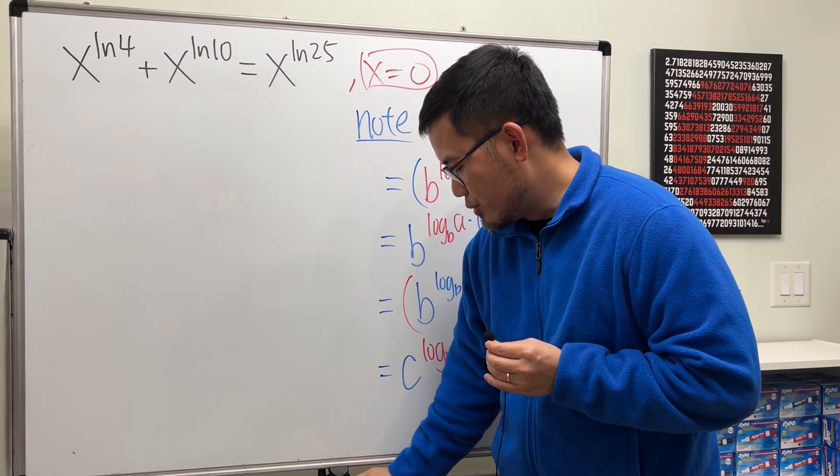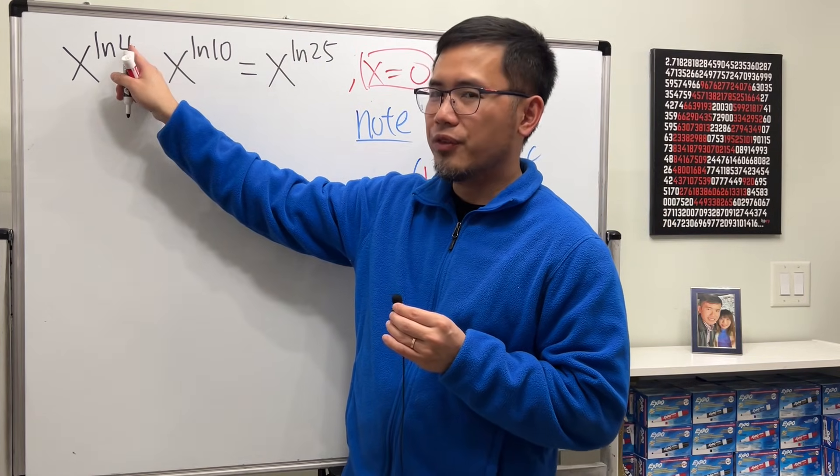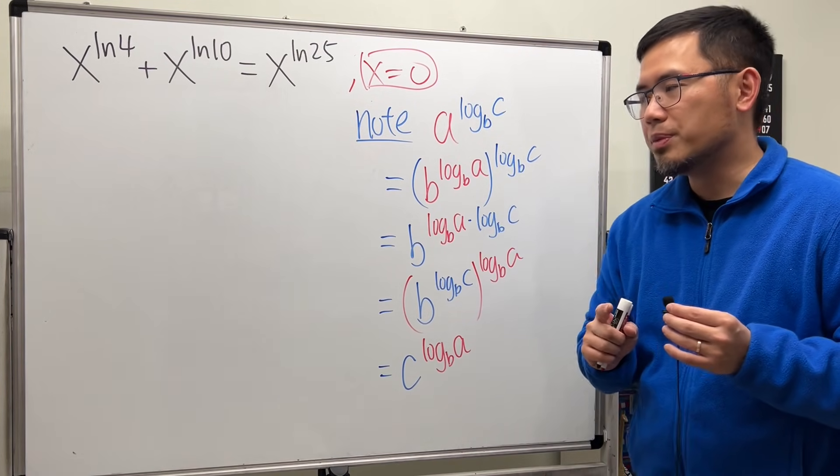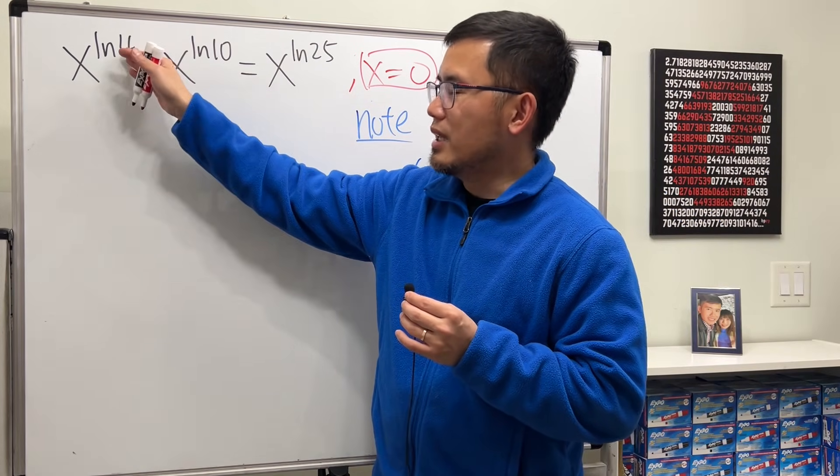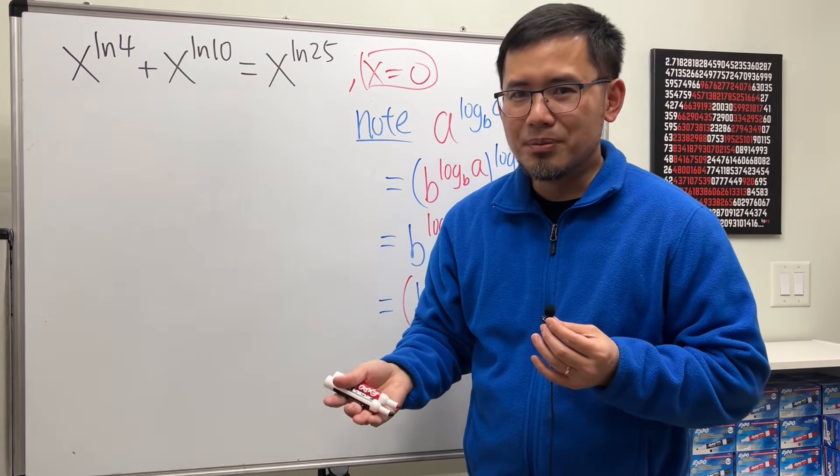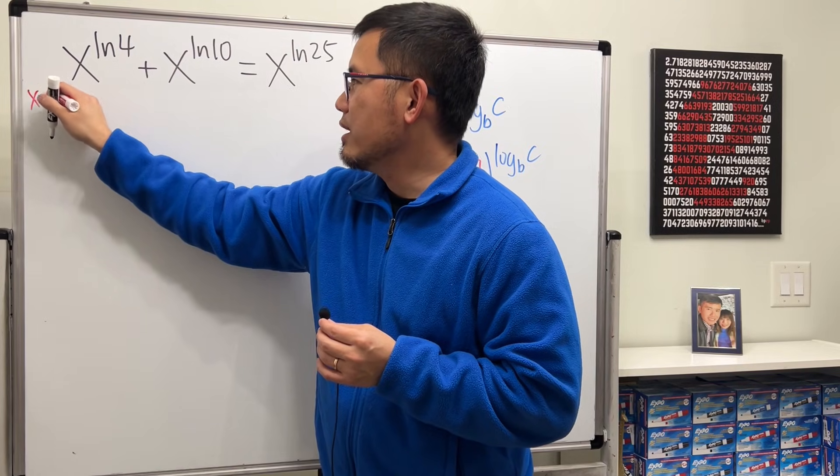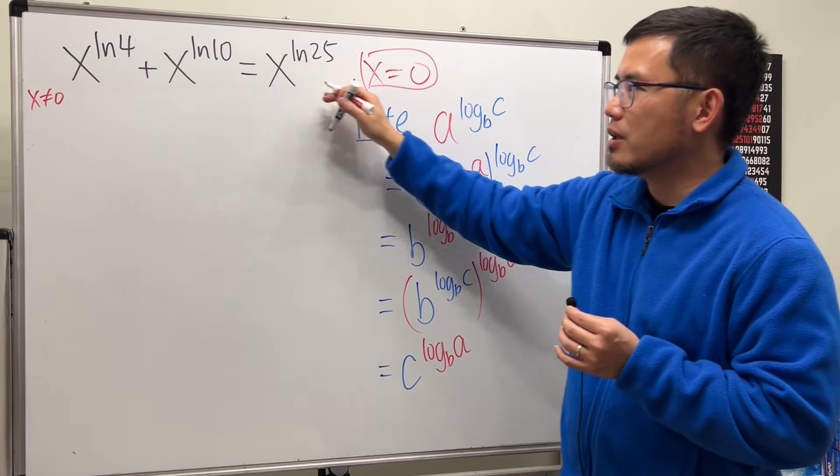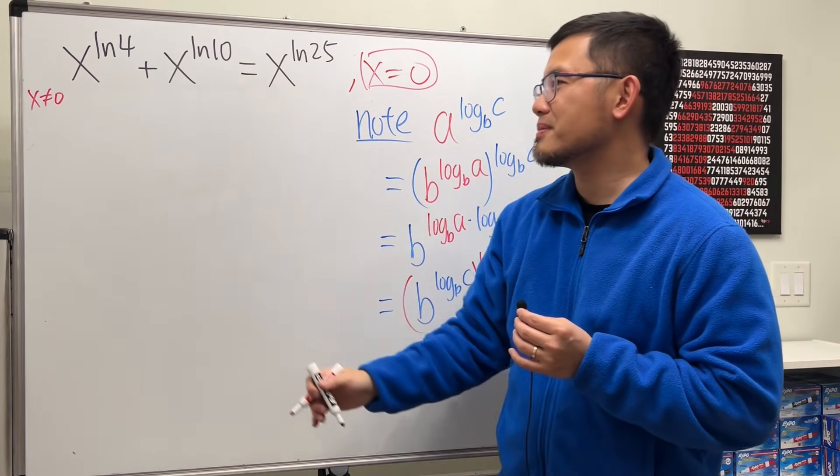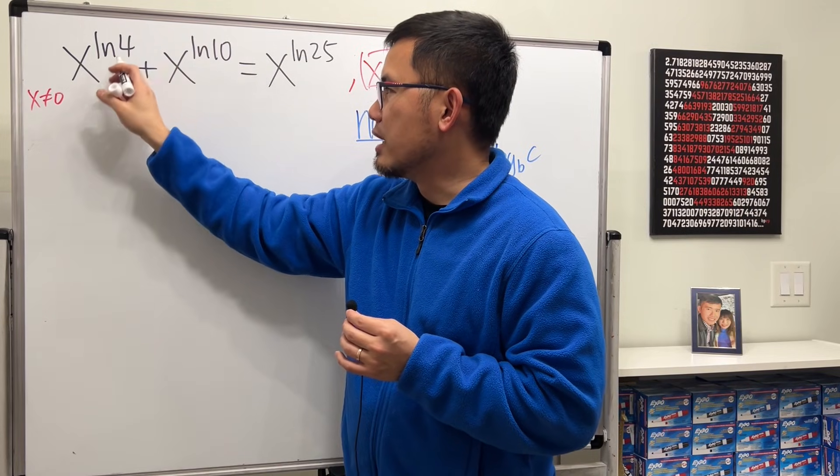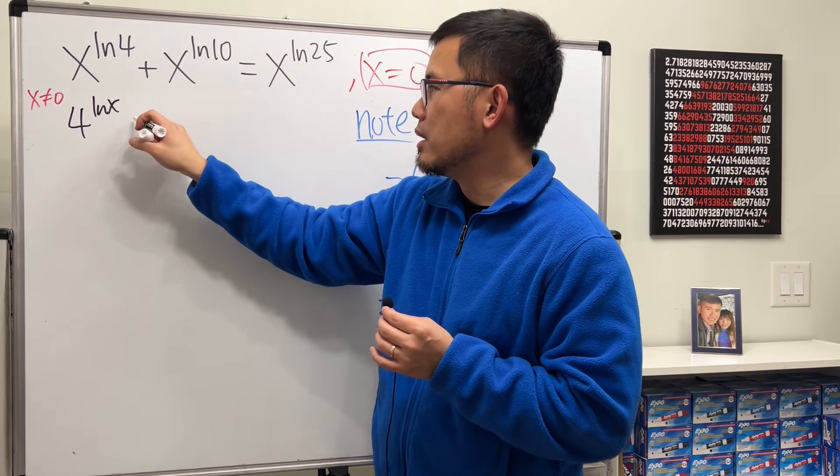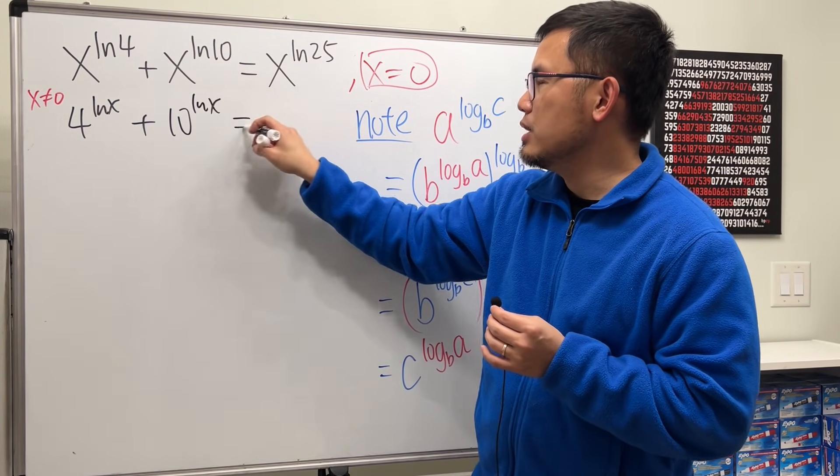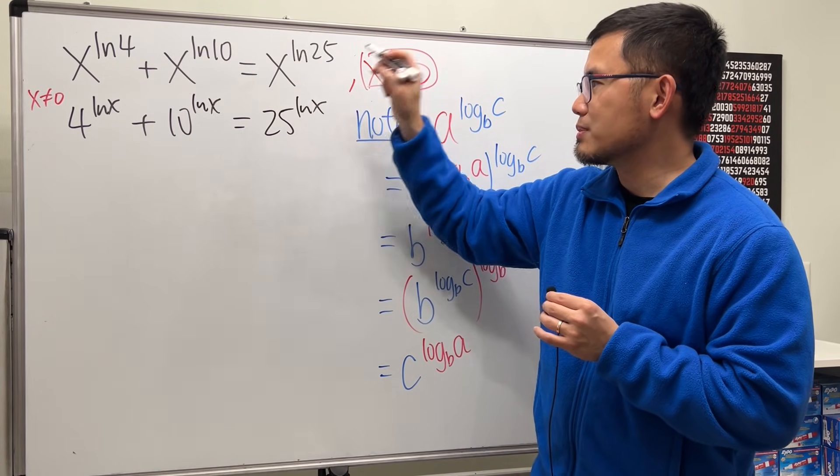Okay, so we can really switch X and then the 4. Ln is just log base e, so this right here certainly applies. But we do have to be careful, though. If you put X to the Ln, X cannot be 0. So let me just indicate that when X is not equal to 0, we can do the following. I have already taken care of X equals 0 as a solution for the original equation. So I'm just going to say we have 4 to the Lnx power, and then let's go ahead and add 10 to the Lnx power, and that's equal to 25 to the Lnx power.